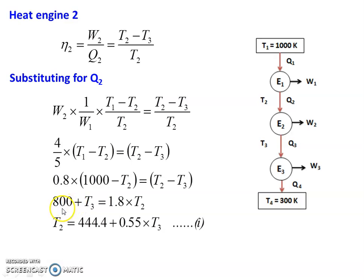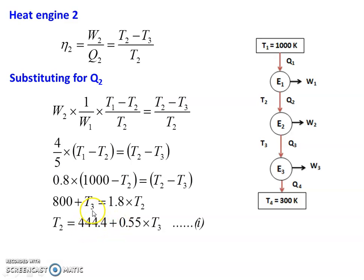Rearranging: 0.8 into T1 minus 0.8 T2 equal to T2 minus T3. With T1 equal to 1000, 0.8 into 1000 equals 800. So 1.8 T2 minus T3 equal to 800. Therefore T2 equal to 800 divided by 1.8, which simplifies to 444.4 plus 0.55 T3. This is equation number 1.